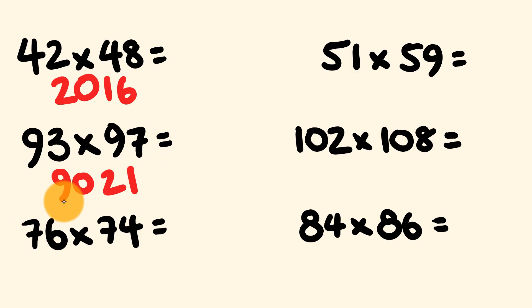Next, 76 times 74. 1 more than 7 is 8. So 7 times 8 is 56. 6 times 4 is 24. 5,624. Our fourth question, 51 times 59. So 5 times 6 is 30, and 1 times 9 is 9, 09.